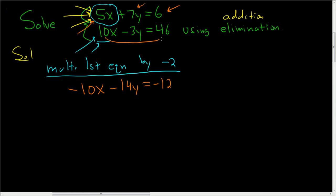Then you just write this one down again. So 10x minus 3y equals 46. Now we'll add.